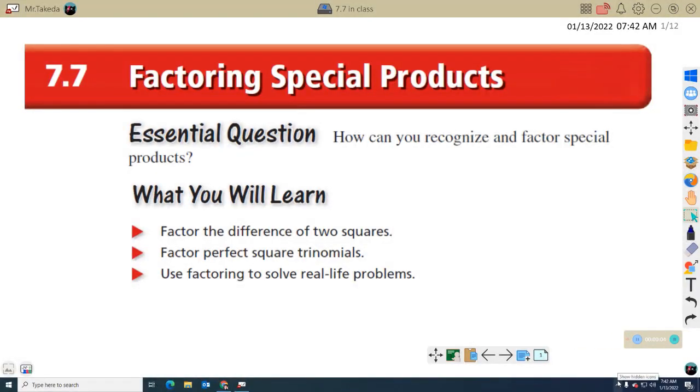Welcome back. This is another exciting episode of Mr. Takeda Teaches Algebra. I'm your host, Mr. Takeda, and I'm going to teach you some algebra right now. This is Lesson 7.7 called Factoring Special Products. Essentially, this is the flip side of when we did the special case shortcuts for multiplying binomials a couple lessons ago. So first of all, we have to recognize special products and factor them. We'll do difference of squares and perfect square trinomials. Okay, so let's get started.